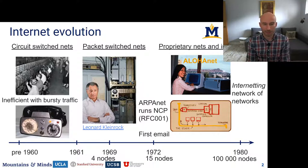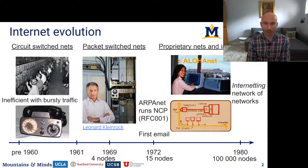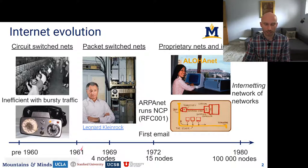Leonard Kleinrock was one of the first people to theorize about packet switching, and he built the first router — basically a machine for receiving and forwarding packets. This is a photo of that first router build. They started building these networks around 1961, when the first packet-switching paper came out from Kleinrock.